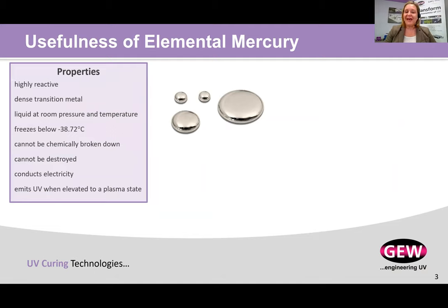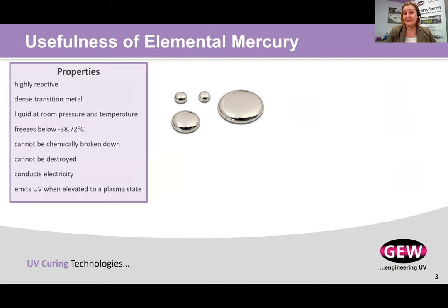Mercury has an incredible list of very useful properties — it's why it's used in mercury-added products and various manufacturing processes. It's highly reactive, very dense, liquid at room pressure and temperature. It cannot be chemically broken down or destroyed. It's a poor conductor of heat, but an incredibly great conductor of electricity. And when we vaporize mercury into a plasma gas, it emits ultraviolet energy.